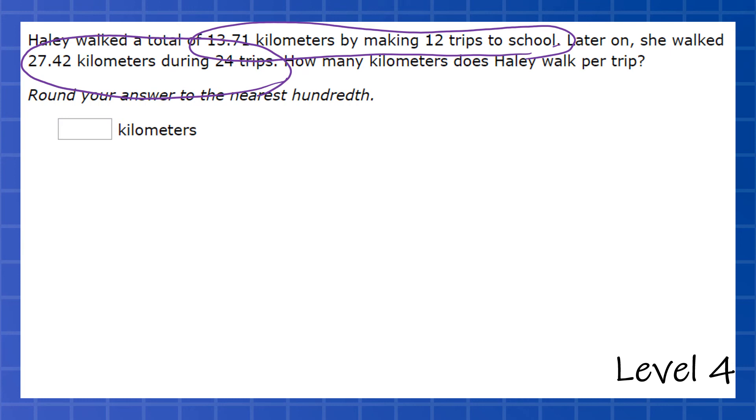And it says x's and y's. So the question is what goes on top, the 13.71 kilometers on top or the 12 on top. And the giveaway is, it says kilometers right there. So since we're answering kilometers and it says per trip, we're going to have kilometers on top.